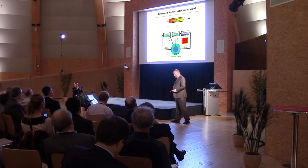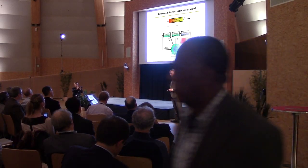Thorium does not have a volatile hexafluoride. You can fluorinate it all you want, and it will not change chemical state — it will stay thorium tetrafluoride. Uranium, on the other hand, does have a volatile hexafluoride.